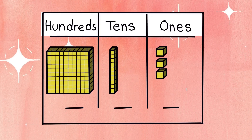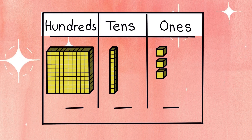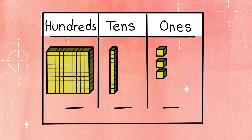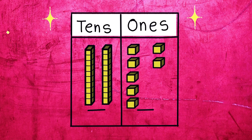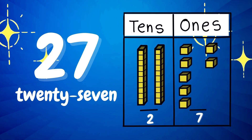Next number. It has three digits: a 100 block, 110, and three ones. Can you guess what it is? 113. Good job. Next number. It has two digits: two tenths and seven ones. It is 27.